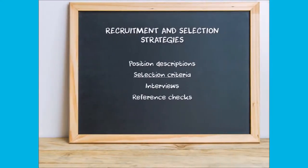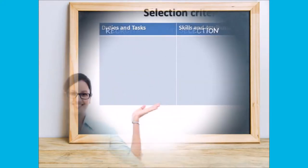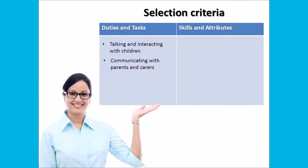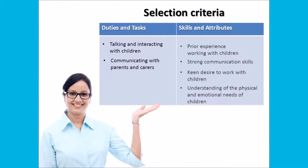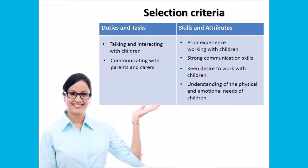Another tool you can adopt is the use of selection criteria. You should frame selection criteria to assess commitment, understandings, attributes, attitudes and values required of the position, particularly as they relate to children. A good way to do this is to list the duties and tasks required of the job in one column, and in the next column list the skills and attributes required to achieve these tasks.